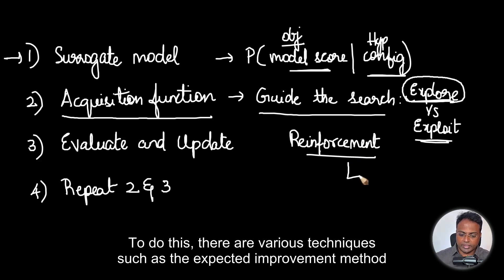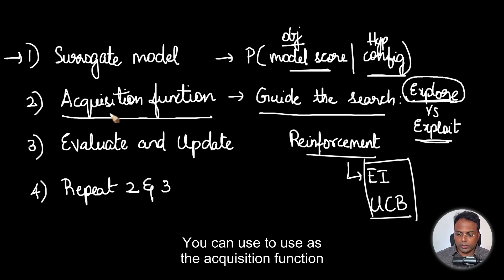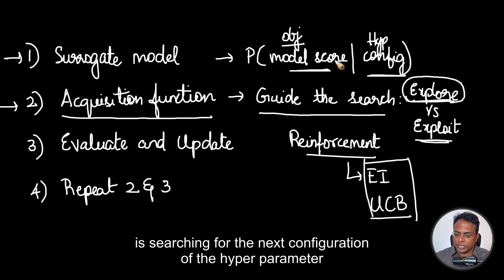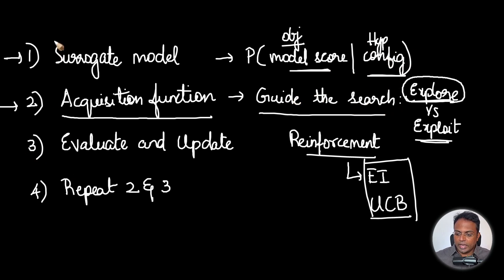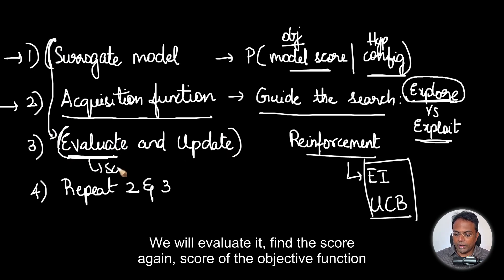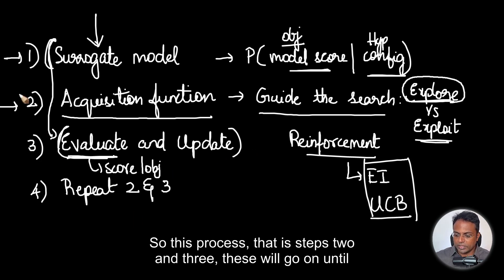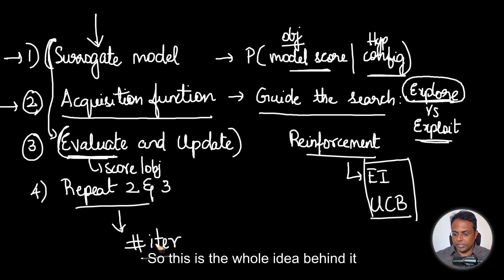To do this, there are various techniques such as the expected improvement method or the upper confidence bound method, which you can use as the acquisition function. This will essentially guide how the algorithm is searching for the next configuration of the hyperparameter. Once the next configuration is chosen, we use the surrogate model again to evaluate the newly chosen configuration, find the score again, and use that newly found information and store it back into the surrogate model. This process — steps 2 and 3 — will go on until the optimization does not improve anymore or the number of iterations the user has set has been achieved.